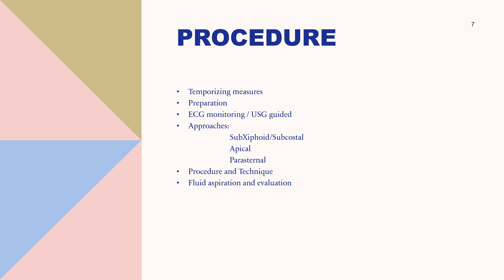Regarding preparation: place all resuscitation equipment at the bedside in anticipation of clinical deterioration. Position the patient with the chest elevated 30–45 degrees to bring the heart closer to the chest wall. Sedation of distressed patients is typically foregone due to the risk of further hemodynamic collapse. If the patient is awake without obvious hemodynamic compromise, short-acting medications such as ketamine, midazolam, or fentanyl can be used. Every effort should be made to ensure aseptic technique — prepare the chest and upper abdomen with a chlorhexidine-based solution and drape the patient. All care providers must wear a sterile hat, mask, gown, and gloves.